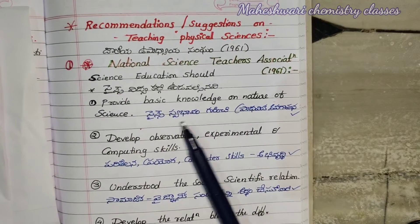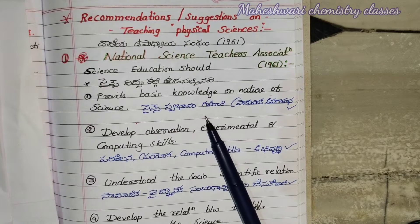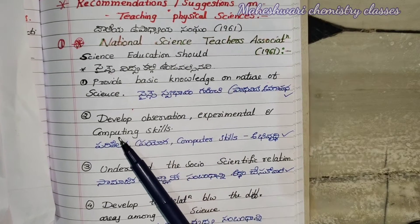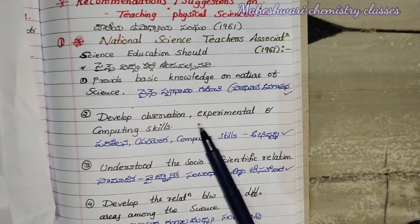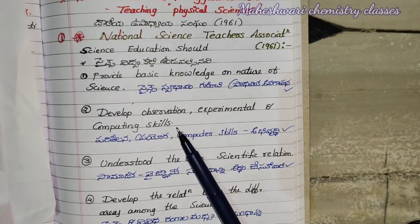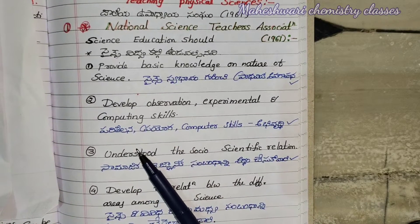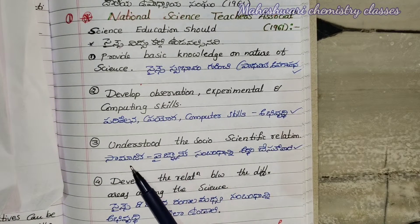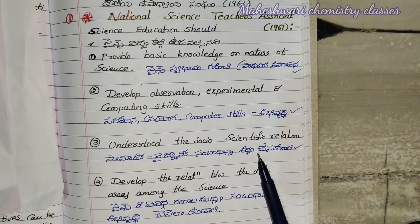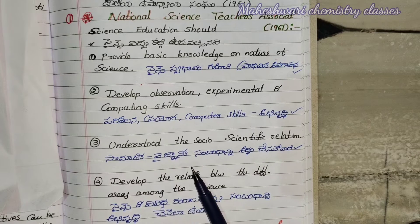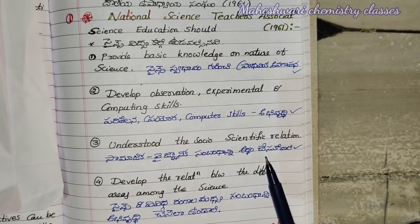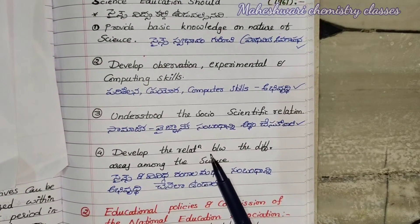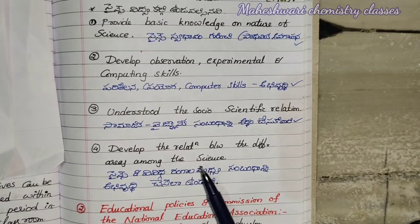First one: provide basic knowledge and nature of science. Second one: develop observation, experimental, and computer skills. Fourth one: develop the relation between the differences in areas among science.